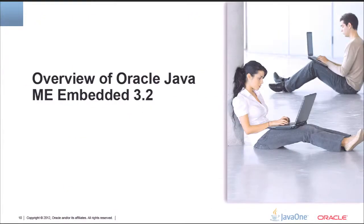Let's talk about the product itself. Why is it called ME Embedded 3.2 and not 1.0? It's actually based on the same Java runtime that Oracle has been shipping for years into the mobile space, which has the version number 3.2. We just took that version number, but this product has many optimizations specifically for the embedded space.